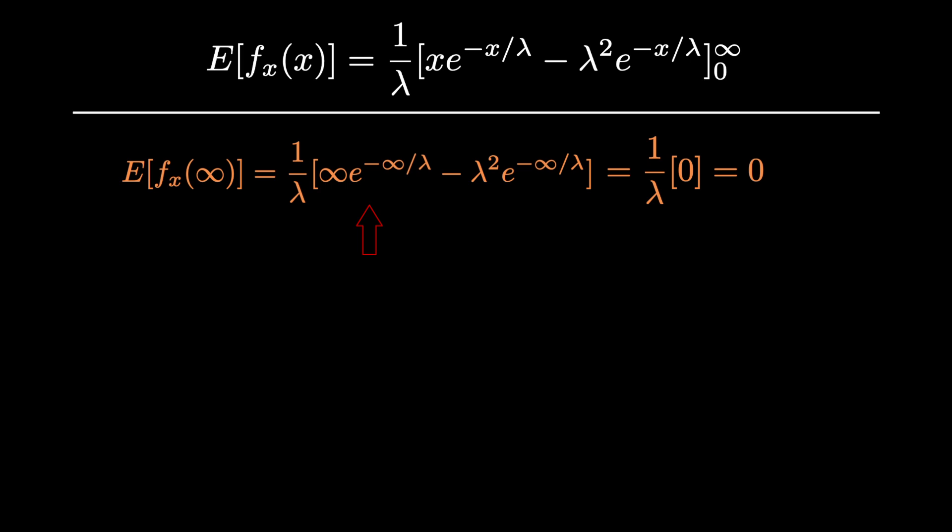So what this means is that infinity is less than e to the infinity over lambda, and the same assumption holds for the second part where lambda squared over e to the negative infinity over lambda should equal 0. So for this part we just get 0.